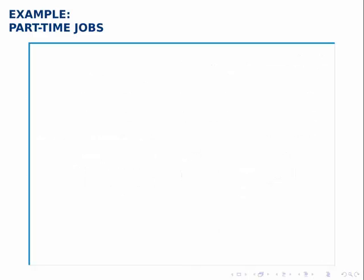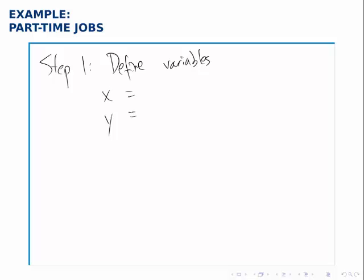Now we can actually start solving the problem. The first thing we do in every linear programming problem is to define the variables. We'll only work with problems that have two variables, so we'll call them x and y. These principles can be applied to problems with many more variables, but in that case the graph is harder to draw or in some cases impossible. So we'll stick to two variables so that we can draw the picture. The variables are always the quantities that we can control, or the quantities that we need to decide on. In this case we need to decide how many hours Julie spends doing each job. So I'll define x as the number of hours that Julie spends dog walking, and y as the number of hours that she spends babysitting.